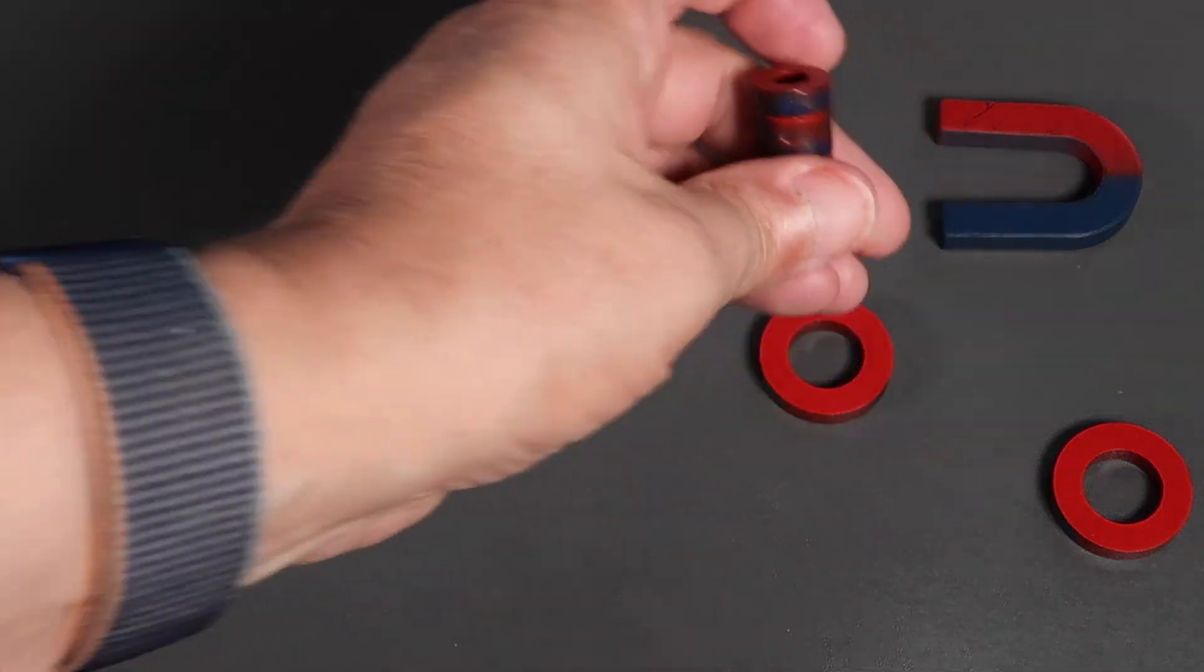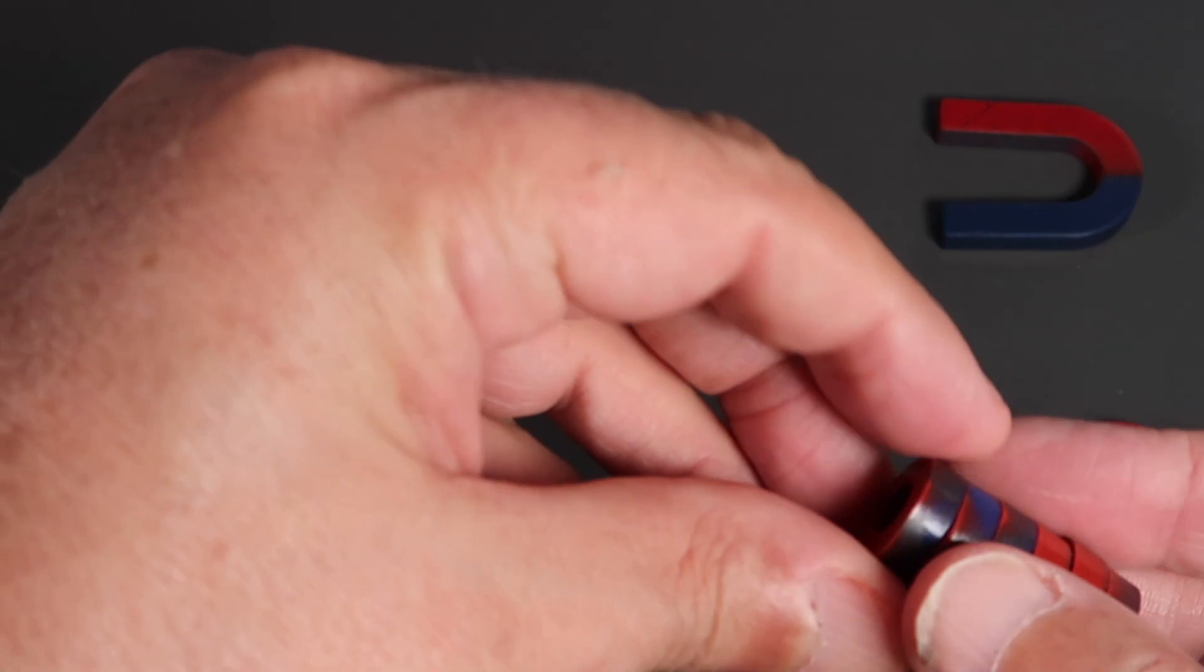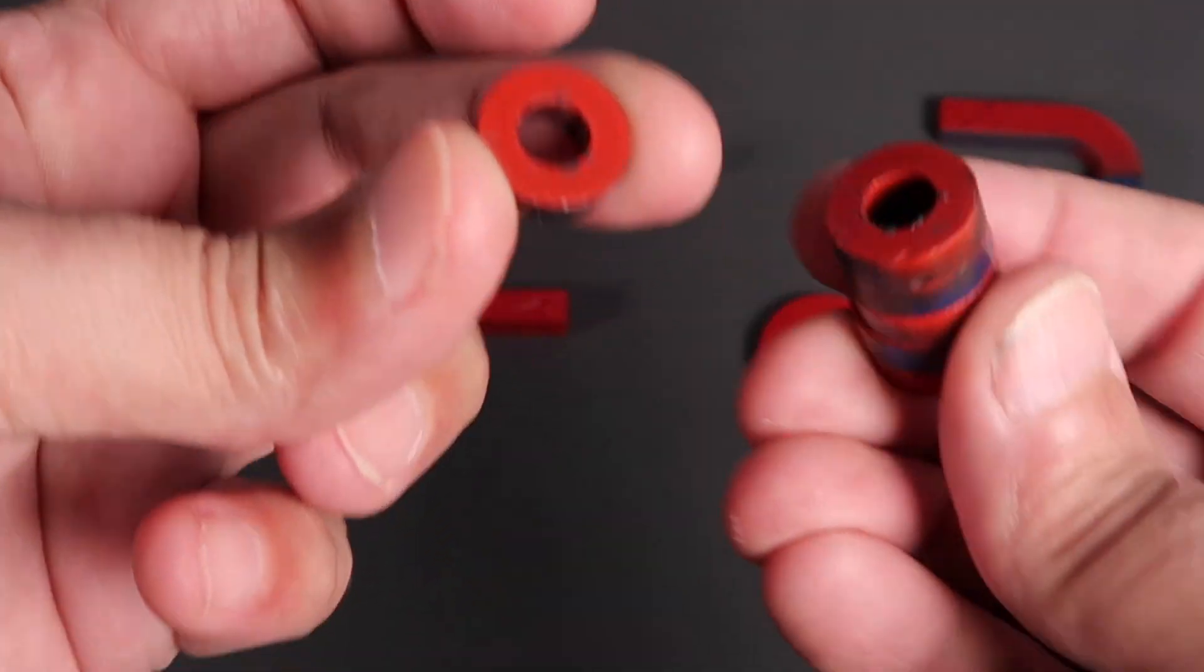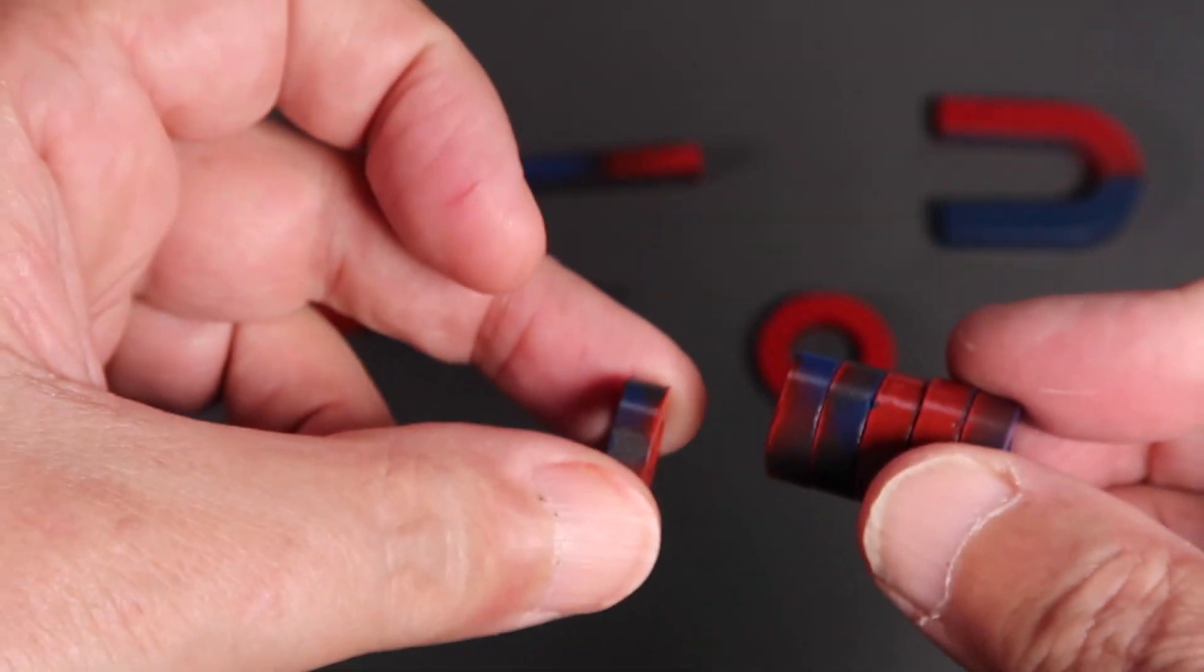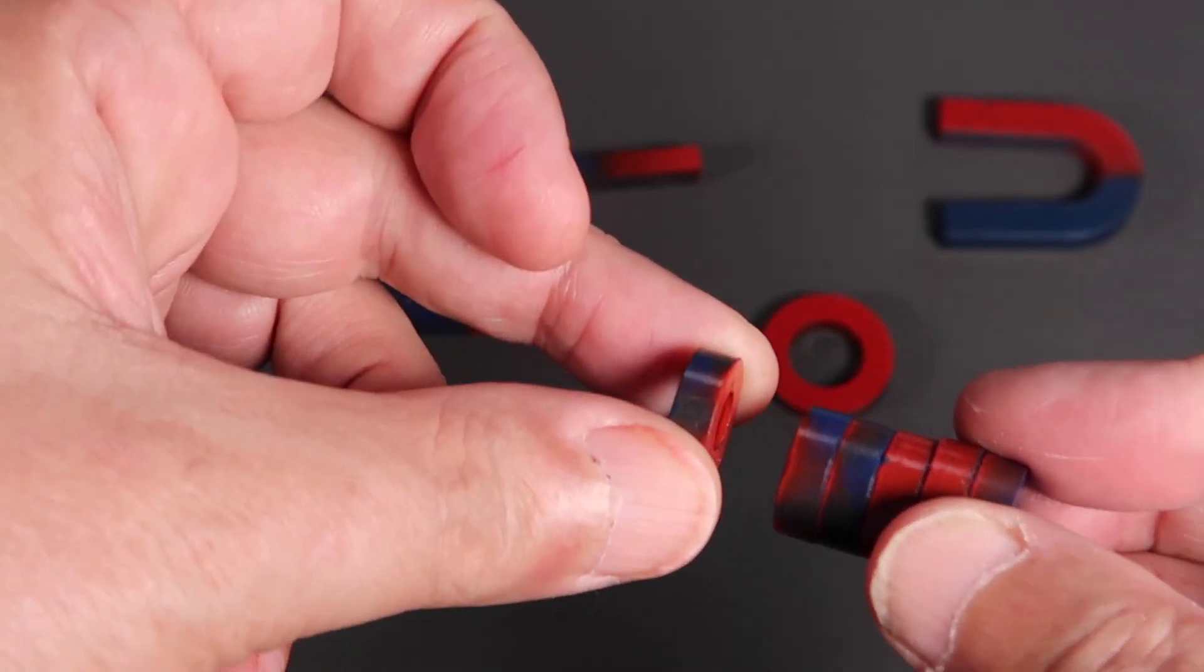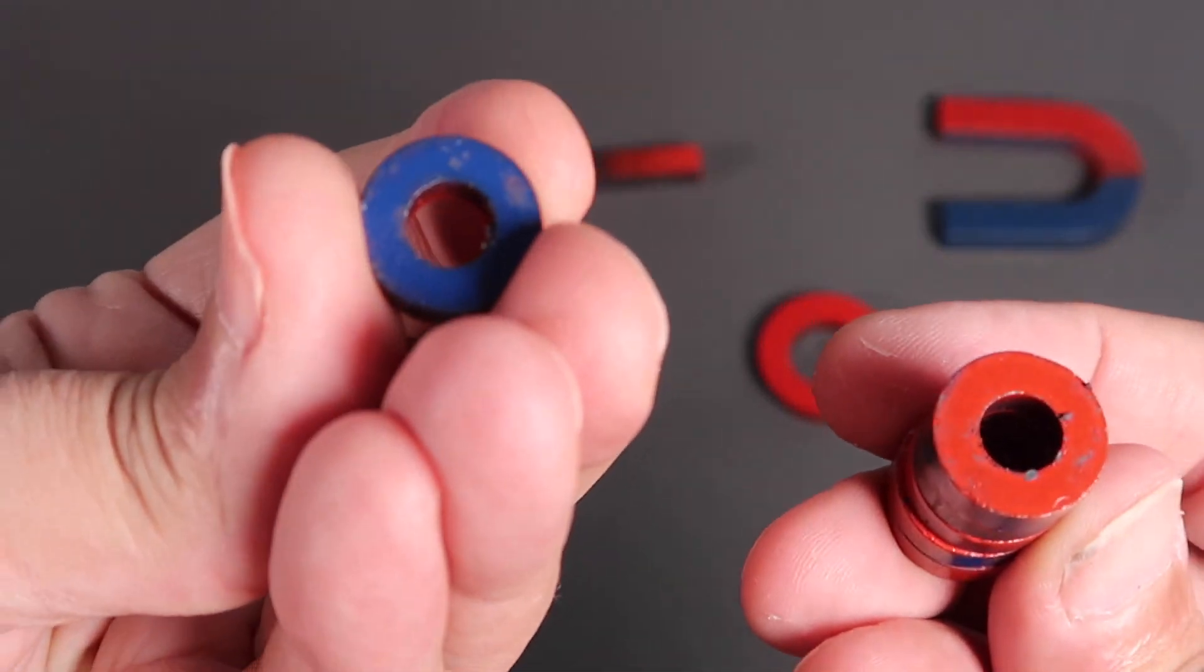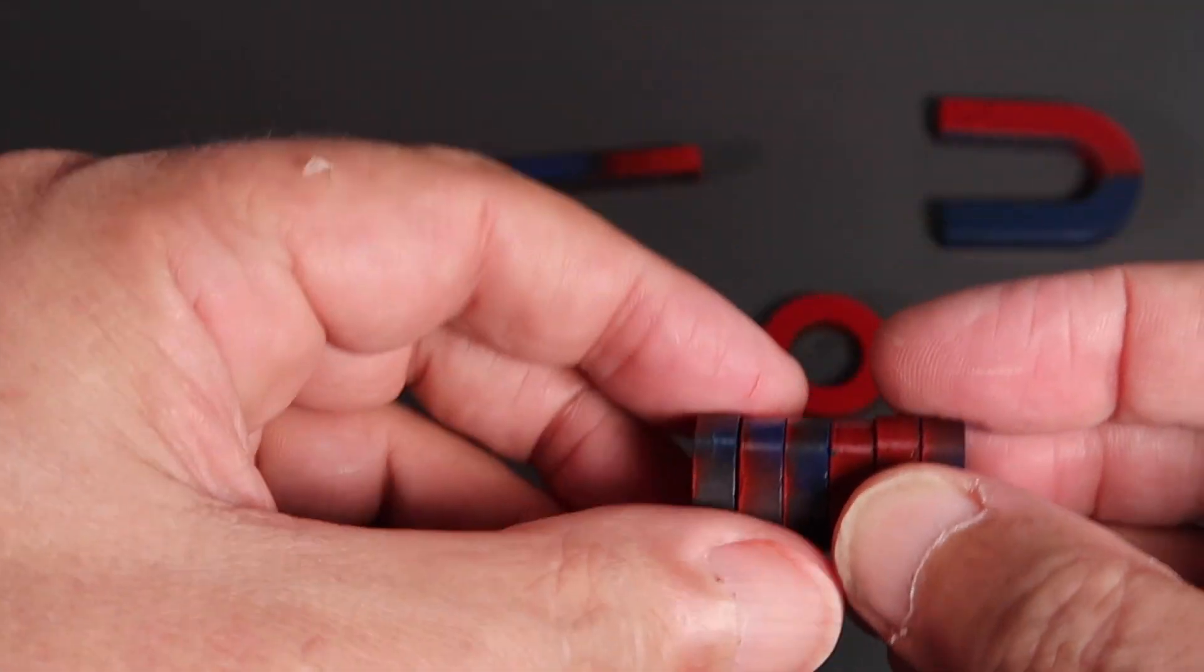For example, if we look at this stack of ring magnets, they're all stuck together. We try to push two with the same poles, both of these are red, north poles. We try to push them together, they repel each other. But if you put opposite poles, north and south, they attract each other.